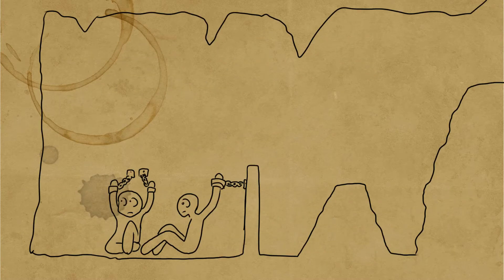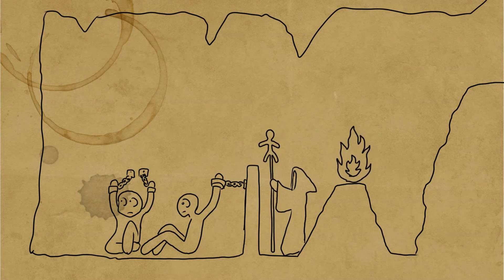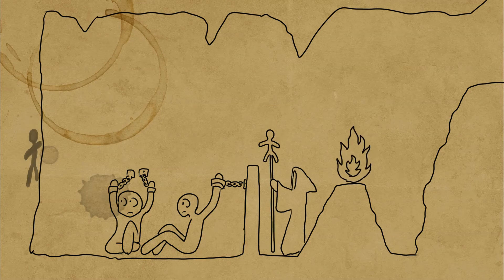The allegory states that there exists prisoners chained together in a cave. Behind the prisoners is a fire and between the fire and the prisoners are people carrying puppets or other objects. This casts a shadow on the other side of the wall. The prisoners watch these shadows believing them to be real.